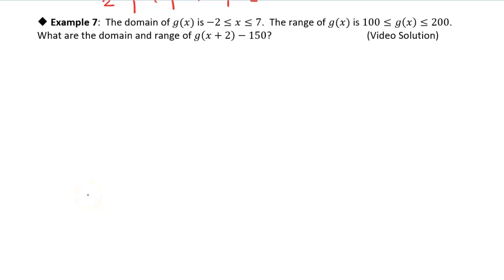Alright, in this last example, we're just going to look at what these transformations do to the domain and range. We don't even know what the function is. We have some function g(x), and the domain is x is between negative 2 and 7, and the range is from 100 to 200.